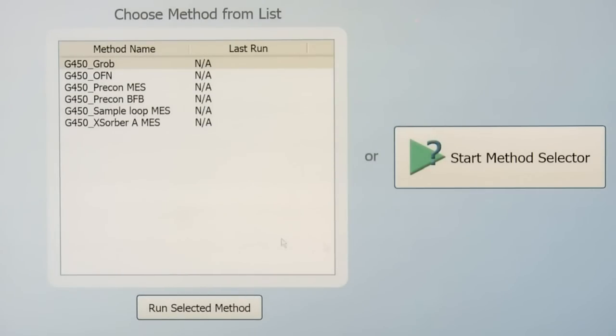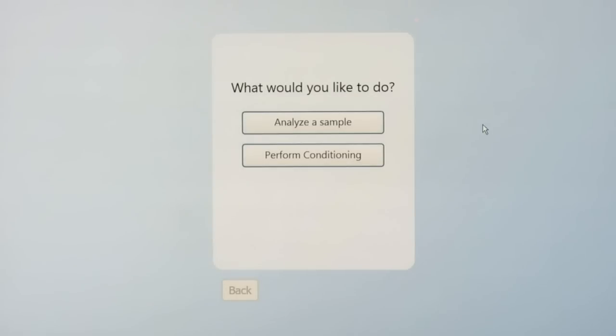Today I'm going to use the selector because I'm not sure which one to use. It's going to ask me a series of questions. First, it's asking if I'd like to analyze the sample or perform conditioning, and we do want to analyze the sample. Next, it's asking what type of sample.